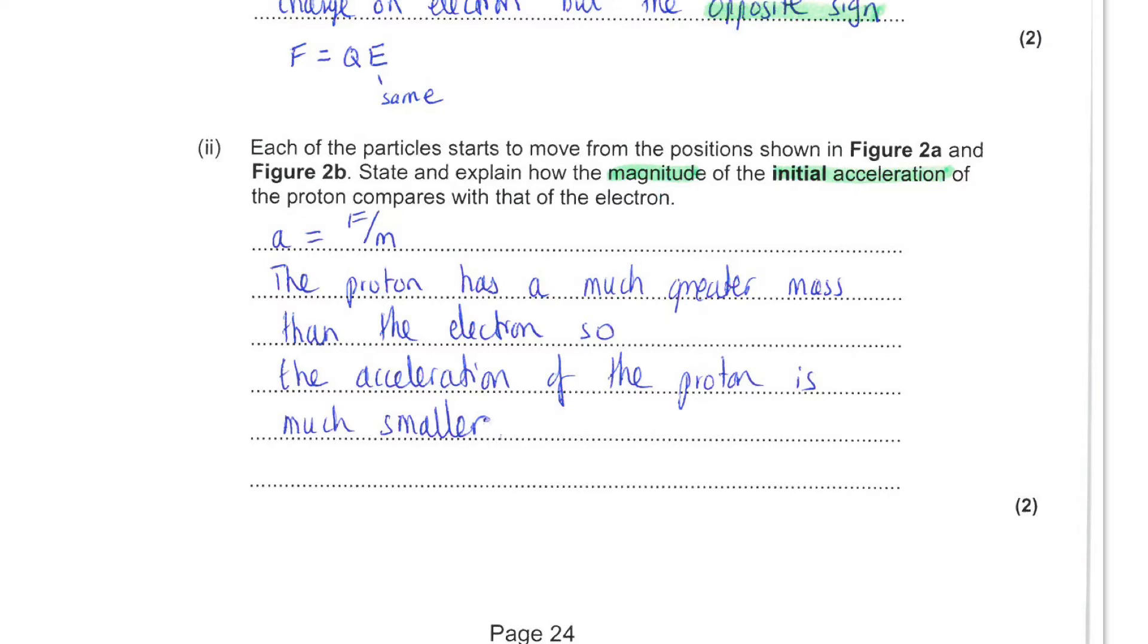Next, you are told that each of the particles starts to move from the position shown in the diagrams. You are asked to state and explain how the magnitude of the initial acceleration of the proton compares to that of the electron. Remember the equation F equals ma, and the acceleration is the resultant force divided by the mass. The proton has a much greater mass than the electron. This means that for the proton, the acceleration will be much smaller.